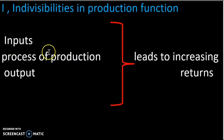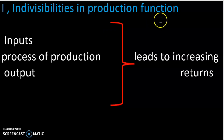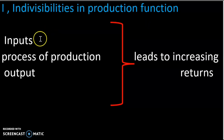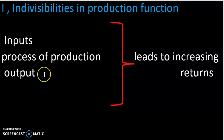The first point is Indivisibility in production function. What is production? Production involves inputs — land input, machinery input, labor input, equipment inputs — and the process produces outputs. These inputs are not always divisible.